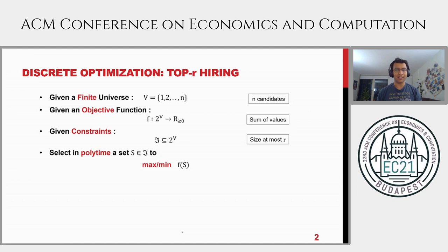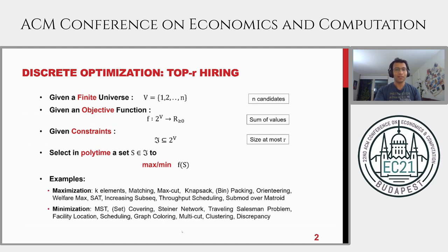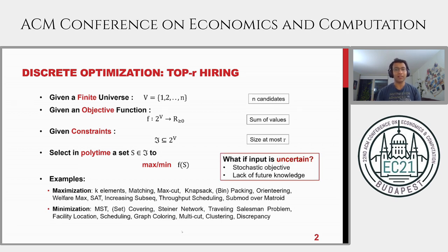This is a very classical setup, and I'm mentioning it just to clarify notation — it can capture many, many problems, including many maximization and minimization problems, and there are several books written on this topic. What we are interested in is: what if the input to this optimization problem is uncertain? There is some uncertainty where the input uncertainty can take many forms.